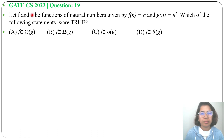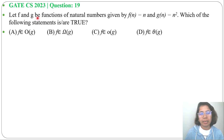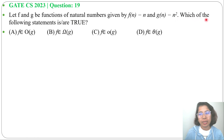Let's solve a previous question on asymptotic notation. This question was asked in GATE CS 2023, question number 19. Let f and g be functions of natural numbers given by f(n) = n and g(n) = n².